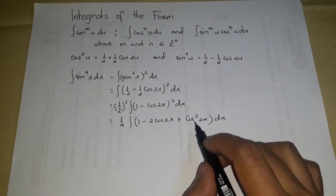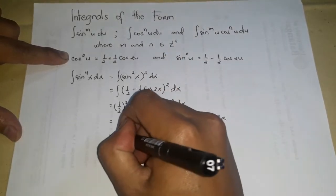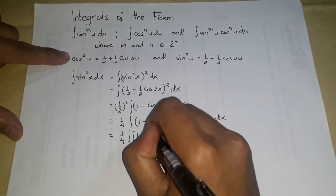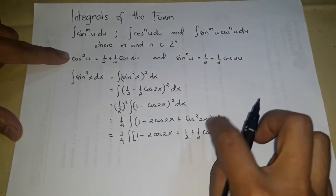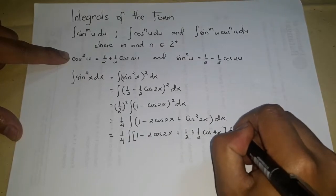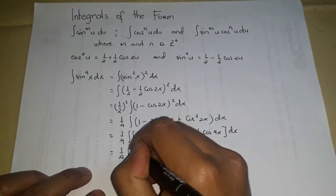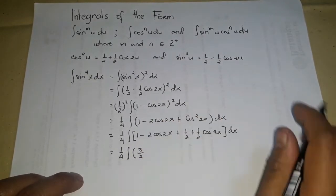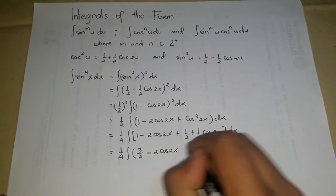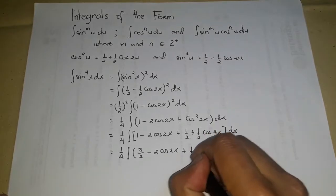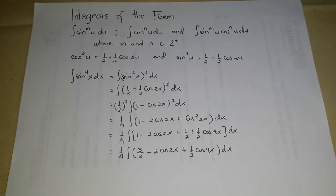We apply the identity cos²(2x) = 1/2 + (1/2)cos(4x), giving 1/4 times the integral of 1 − 2cos(2x) + 1/2 + (1/2)cos(4x) dx. Combining 1 and 1/2, we get 3/2, so the integrand becomes 3/2 − 2cos(2x) + (1/2)cos(4x) dx.